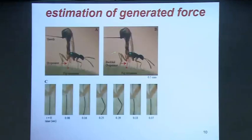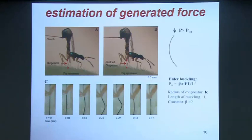We also went on to estimate how much force the insect could be exerting as she pushes inside. If you have a column and keep adding load, the minute it buckles, the structure doesn't work. Based on simple ideas of how columns work, we calculate how much force it takes and watch at what point in the video the ovipositor buckles. This gives us an idea of how much force that insect could be exerting in doing this process.